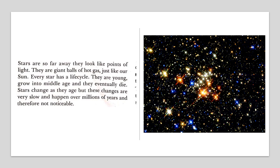Stars are so far away they look like points of light. The stars are very far from the earth, that's why they look only like a dot or point of light. Actually, they are very huge, but they appear very small because of the distance. They are giant balls of hot gas, just like the sun. All stars are made up of hot gases, even the sun.